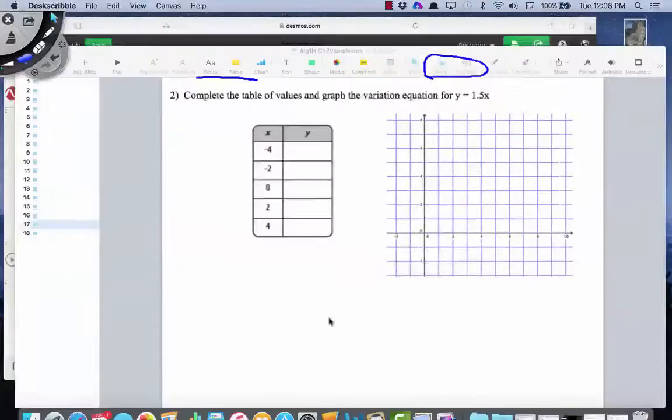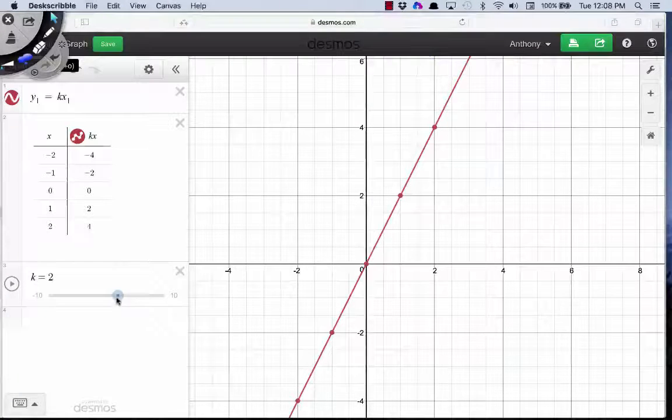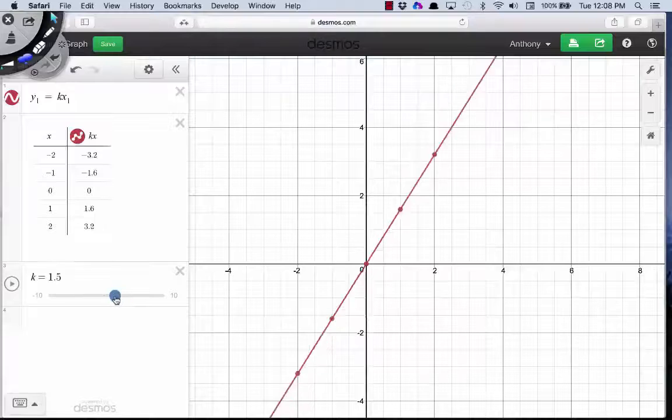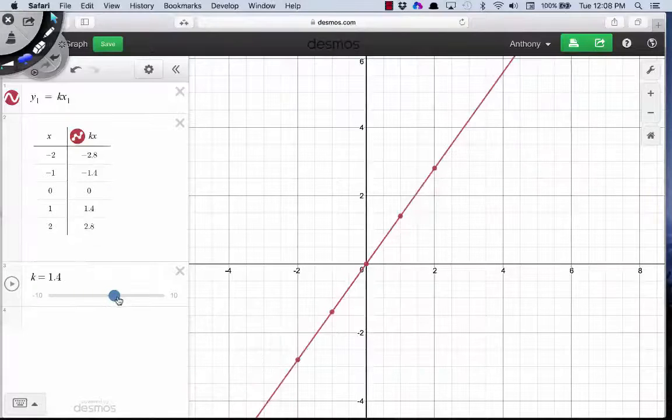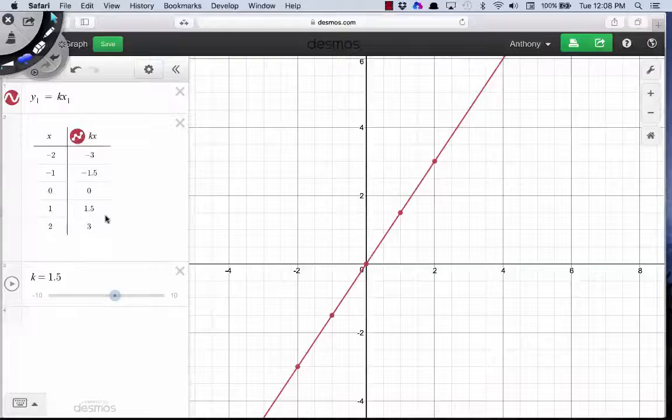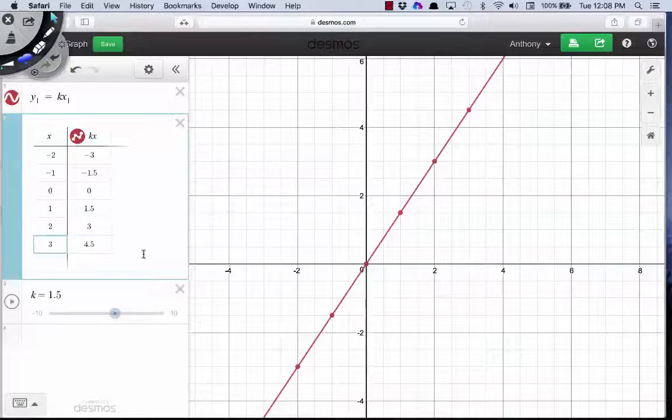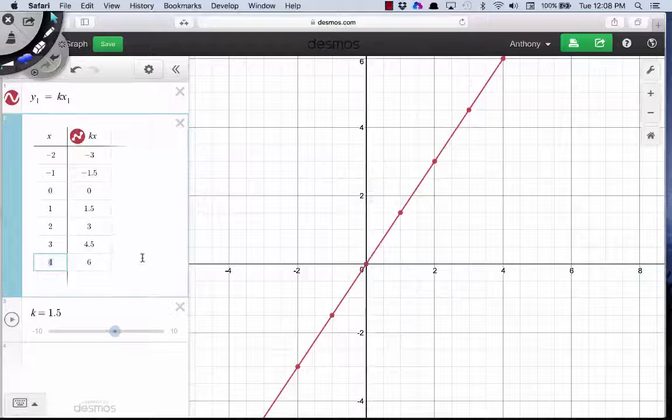Let's go out to Desmos and take a look at that graph. All right, we're going to let our value for y equal 1.5. And here's our table of values. We see that 0, 0 passes to the origin. 1, 1.5, 2, 3. If I enter in more values here, I can see that I'll continue to get their y values.